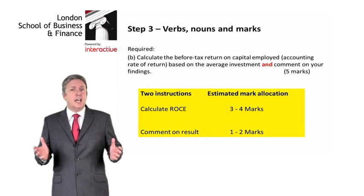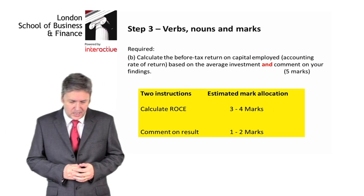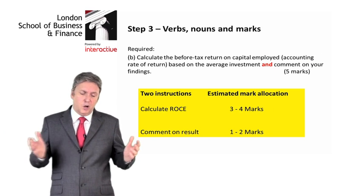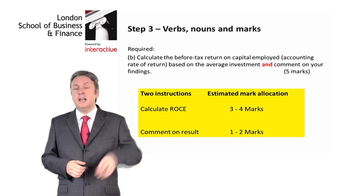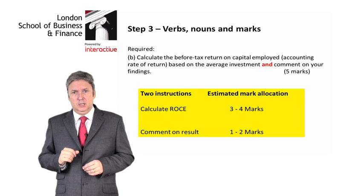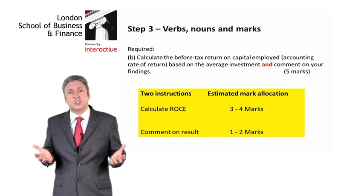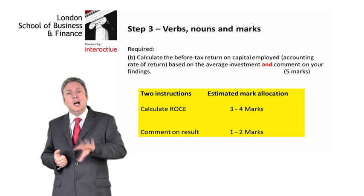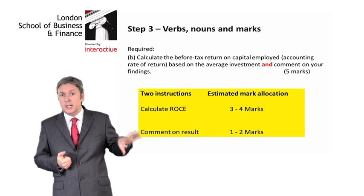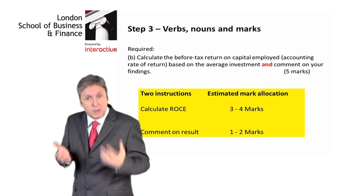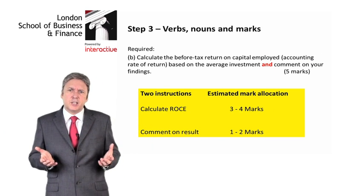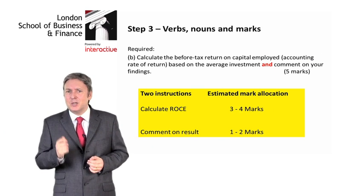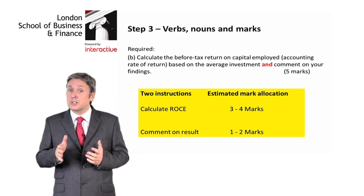If we look at part B, again it's pretty simple: 'calculate before tax return on capital employed (accounting rate of return) based on the average investment, and comment on your findings.' Again, calculate and comment. So we've got a 5-marker here, but really it's two — a 3 or 4 marker and a 1 or 2 marker. When you get into the exam hall, you have to make your guesstimate of how many marks are available in each part.